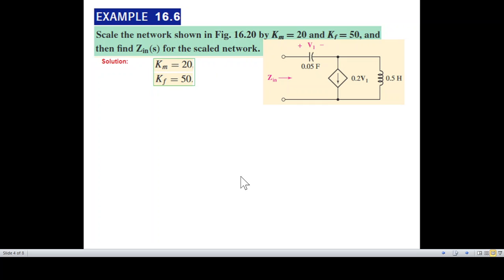These are the factors given from here and this is the formula. The resistance is multiplied by the magnitude factor. Inductor is multiplied by the magnitude factor and divided by the frequency factor. Capacitor is divided by both the factors. Keep this in mind.